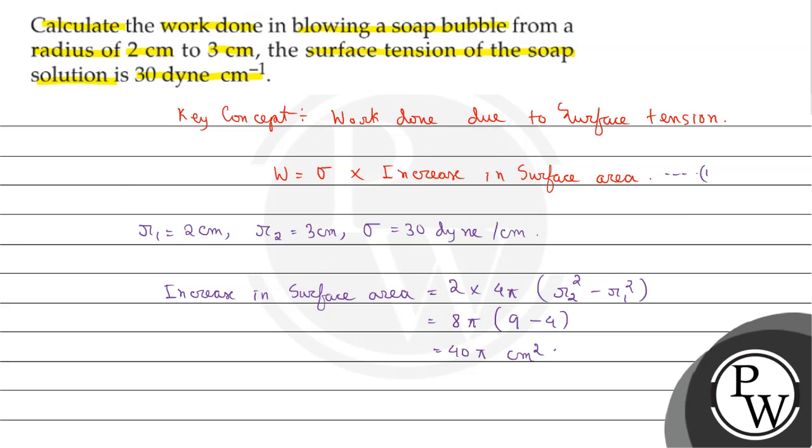This is equation number 1. From equation 1 we will get work done W equals 30 multiplied by 45.